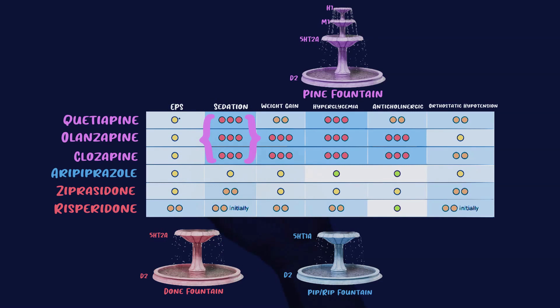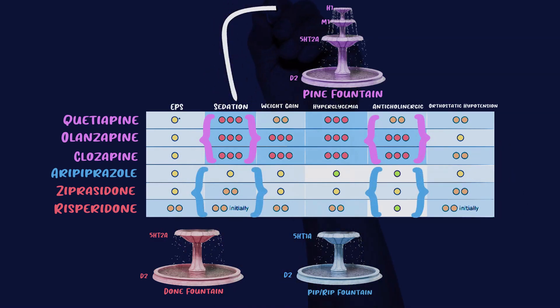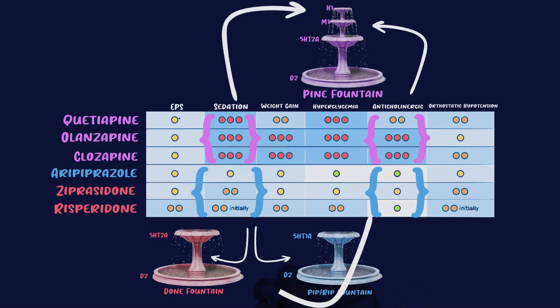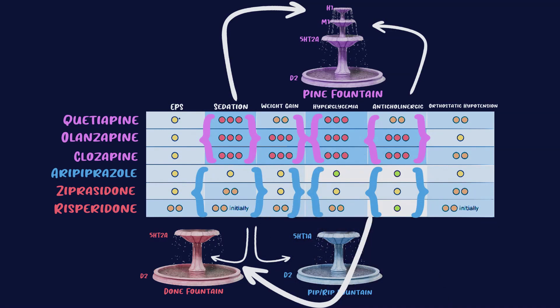If we look at sedation, which is caused by antihistamine and anti-muscarinic activity, we'll see that for the pines — which have H1 and M1 in the backbone — they're very sedating. Aripiprazole and the dones, which don't have those receptors, tend to be less sedating. For weight gain and hyperglycemia, antihistamine activity is involved, which is why the pines typically cause the most weight gain and the worst metabolic side effects. The dones and pips and rips are not quite as bad.